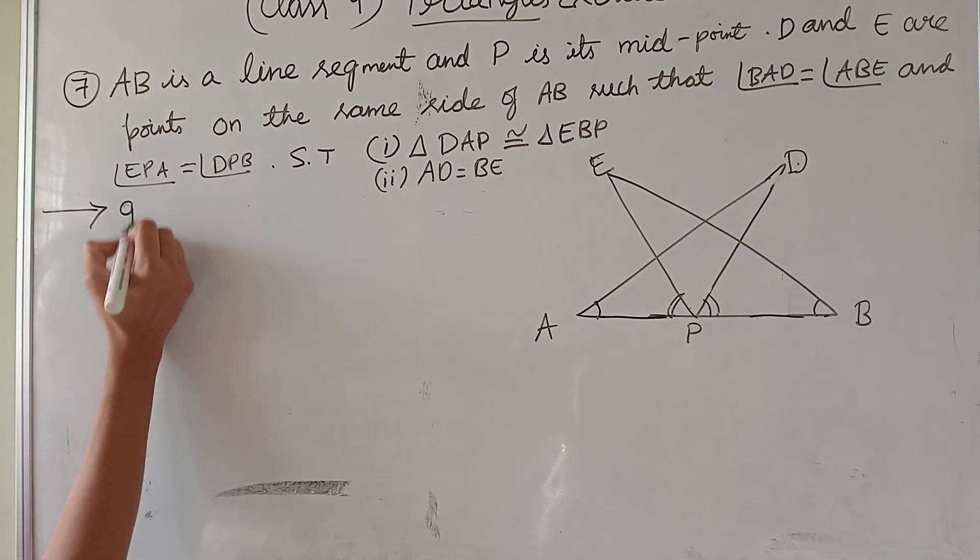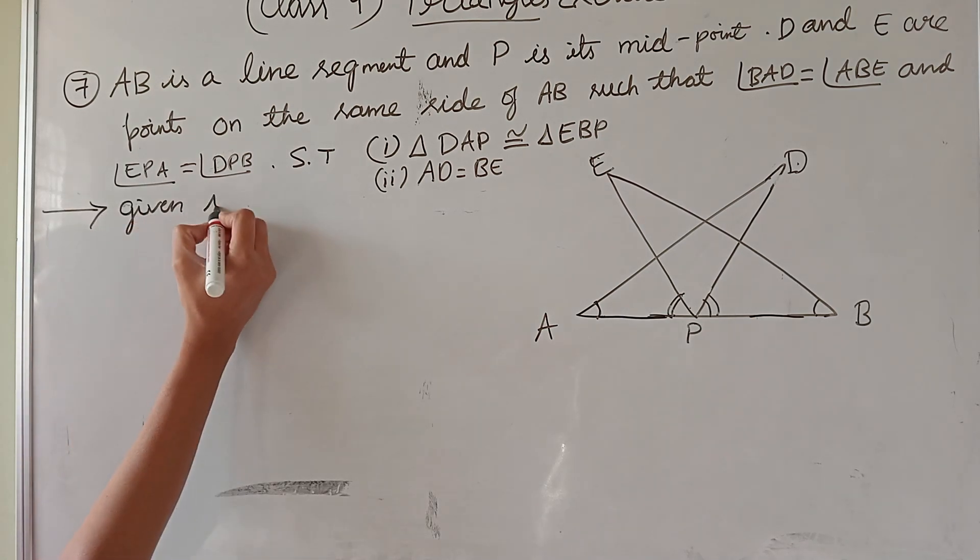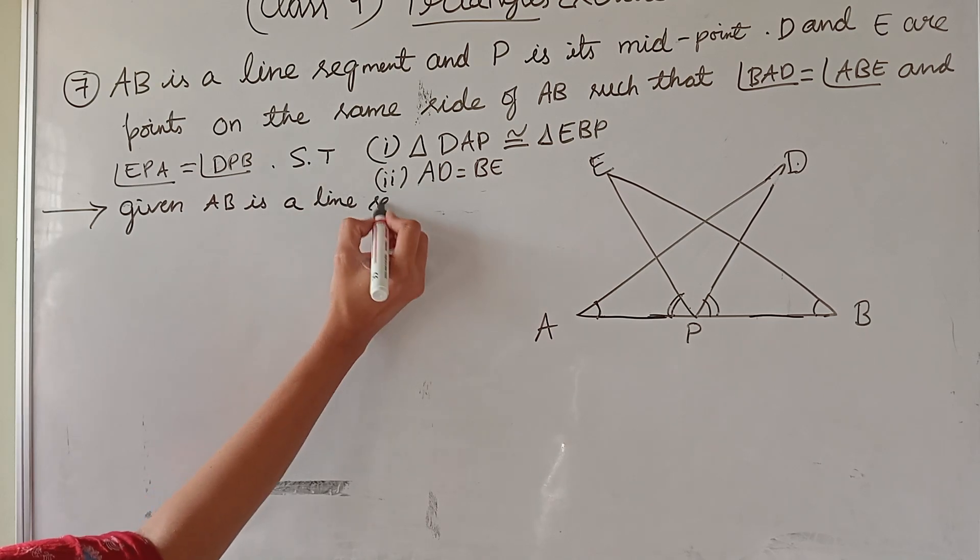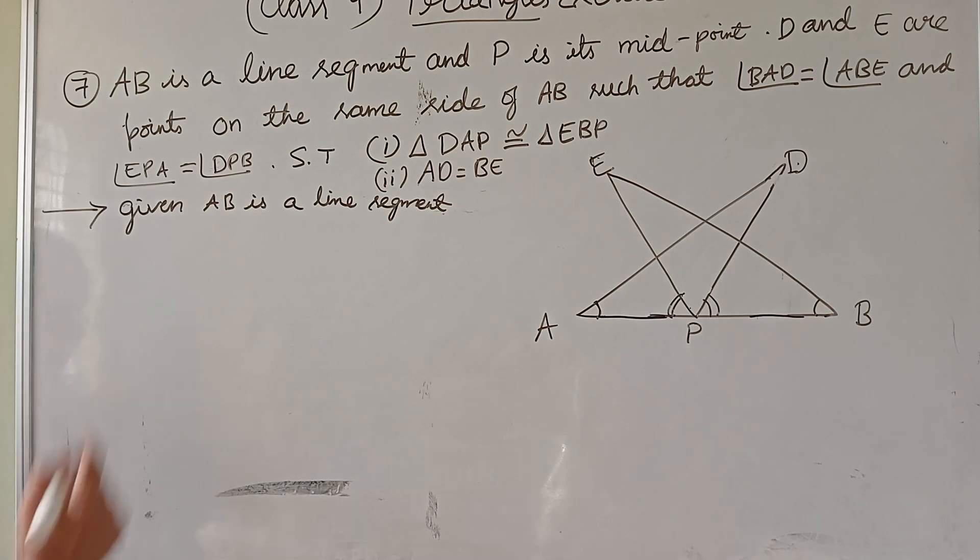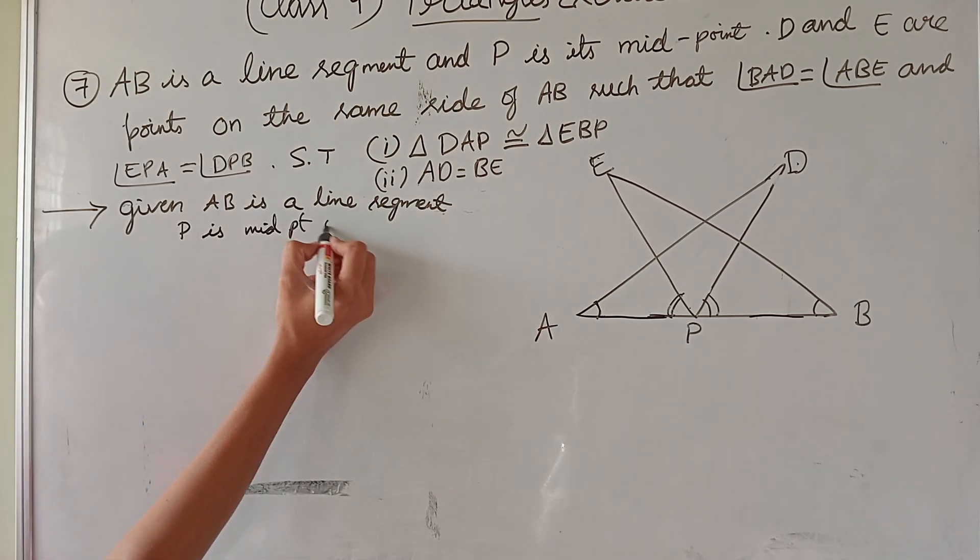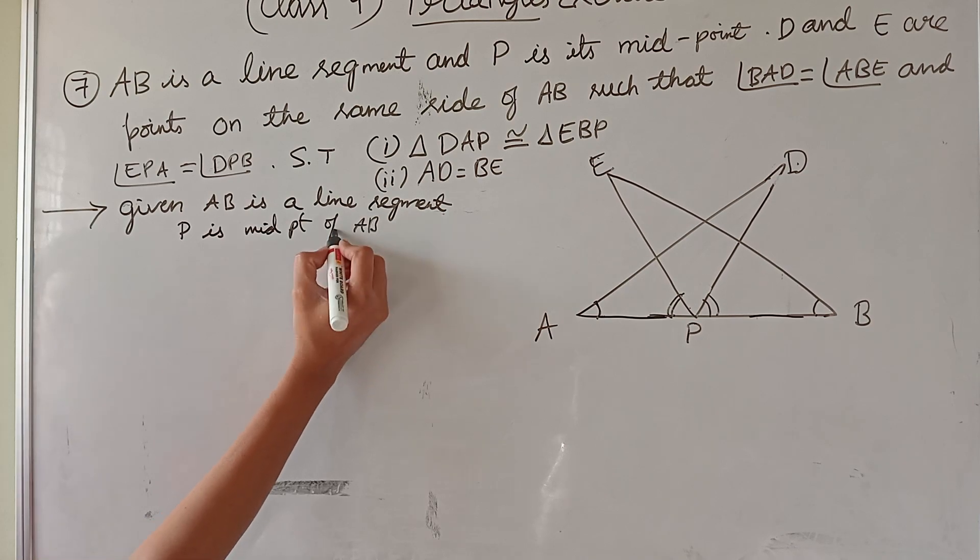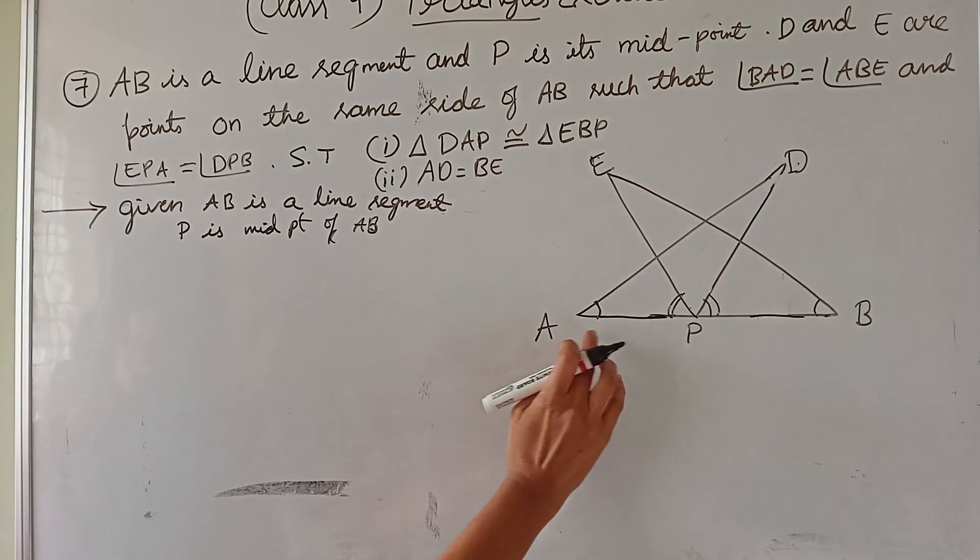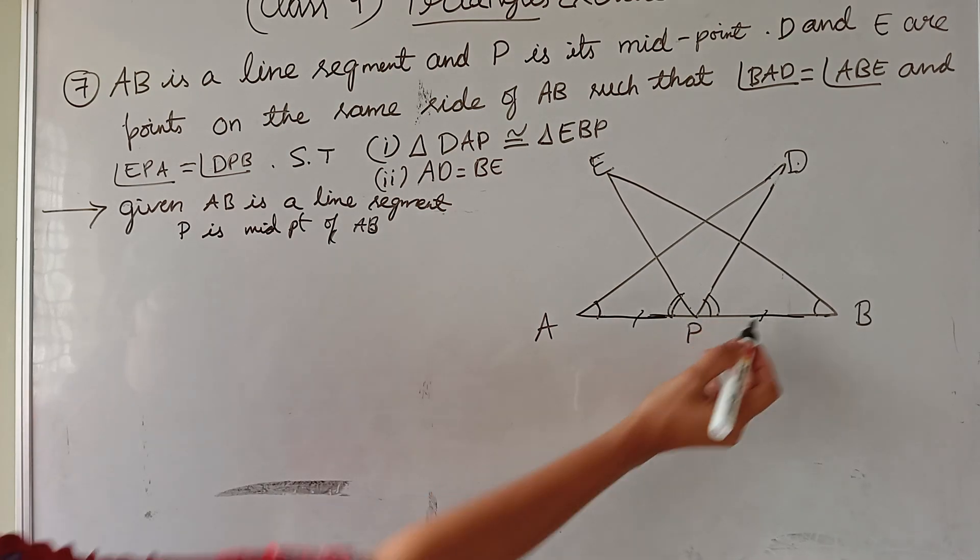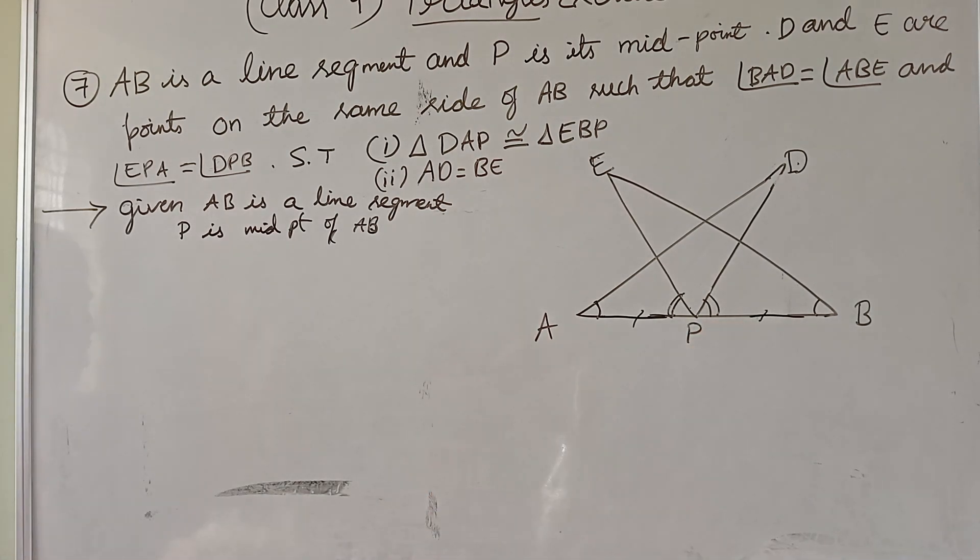First let's write given. Given AB is a line segment, line segment means which is having two end points. P is midpoint of AB. That means AP equal to BP because midpoint divides the line equally.